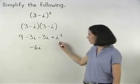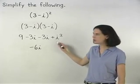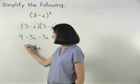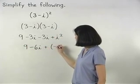And remember that i squared is negative 1, so we have 9 minus 6i plus negative 1.